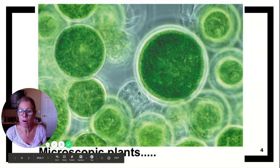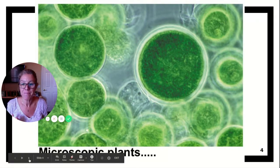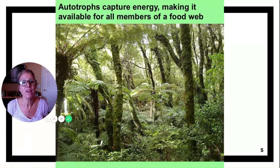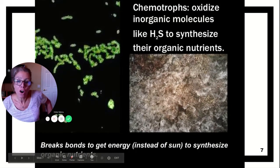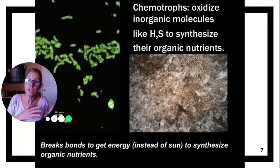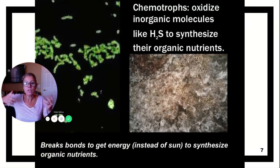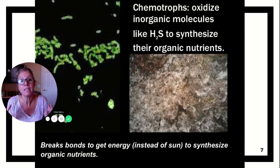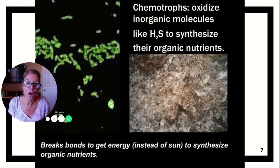You could have really small microscopic plants, and they are some of the biggest producers on our planet. They capture the energy and make it available for all members of the food web. Not all autotrophs are photo-autotrophs. The ones using light energy take inorganic CO₂ and make it organic, but chemo-autotrophs get their energy from breaking bonds. If you've ever been to a natural hot springs and it smells like rotten eggs, that's because those bacteria are breaking bonds between hydrogen and sulfur and using that energy to reduce CO₂ into glucose.